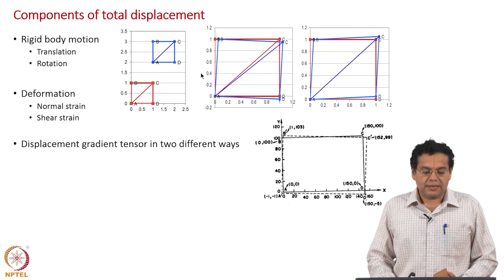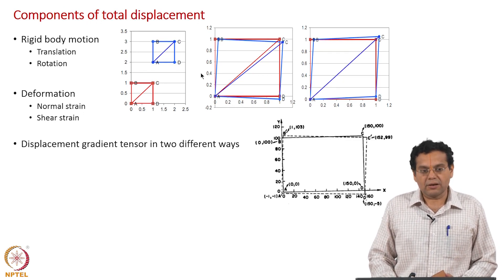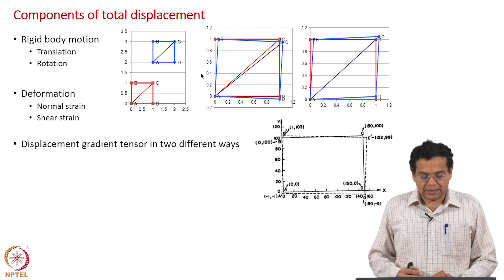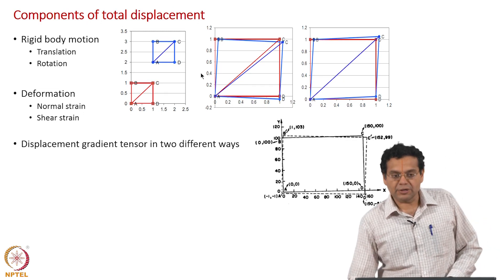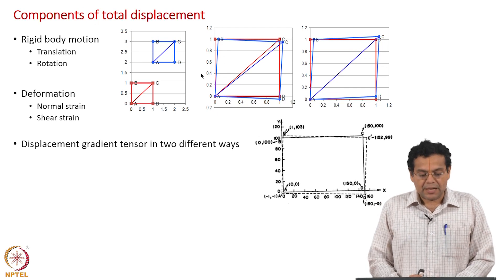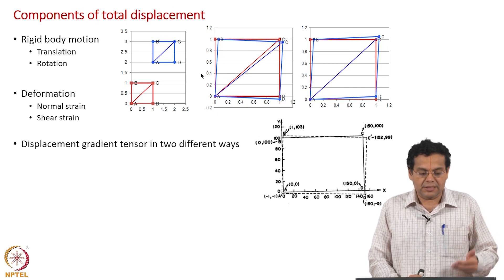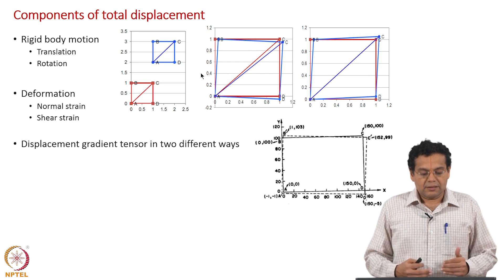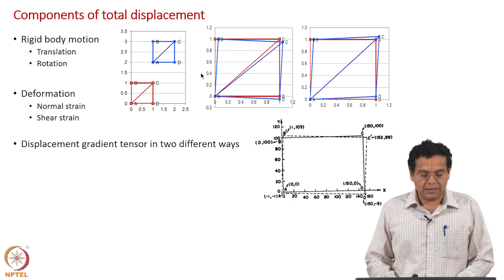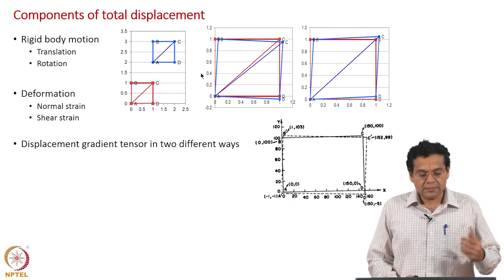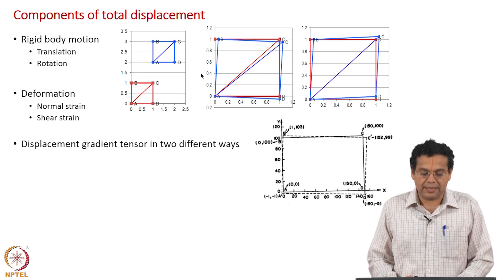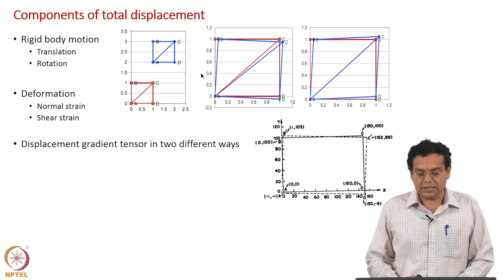Translation can be easily taken care of by writing the difference in displacement. We arrived at the displacement gradient tensor in two different ways: one mathematical, the other by analyzing individual contributions namely normal strain, shear strain, and rotation. Now we are ready to look at the split between rigid body motion and deformation — in particular to separate out rotation from normal strain and shear strain, since translation has already been taken care of by working in terms of difference in displacement.